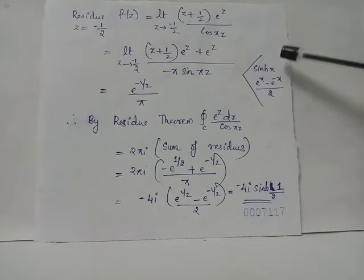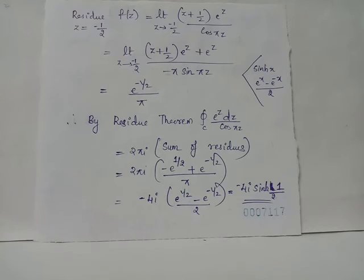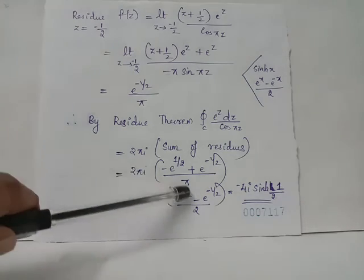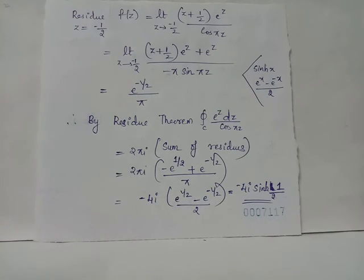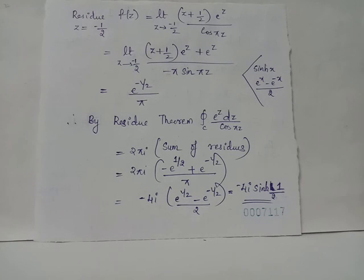Using the identity sinh(x) = (e^x − e^(−x)) / 2, the expression can be rewritten. Cancelling π from numerator and denominator and multiplying and dividing by 2, we obtain −4i · (e^(1/2) − e^(−1/2)) / 2, which equals −4i · sinh(1/2). Thus, by the residue theorem, the integral over C of f(z) dz equals −4i sinh(1/2).